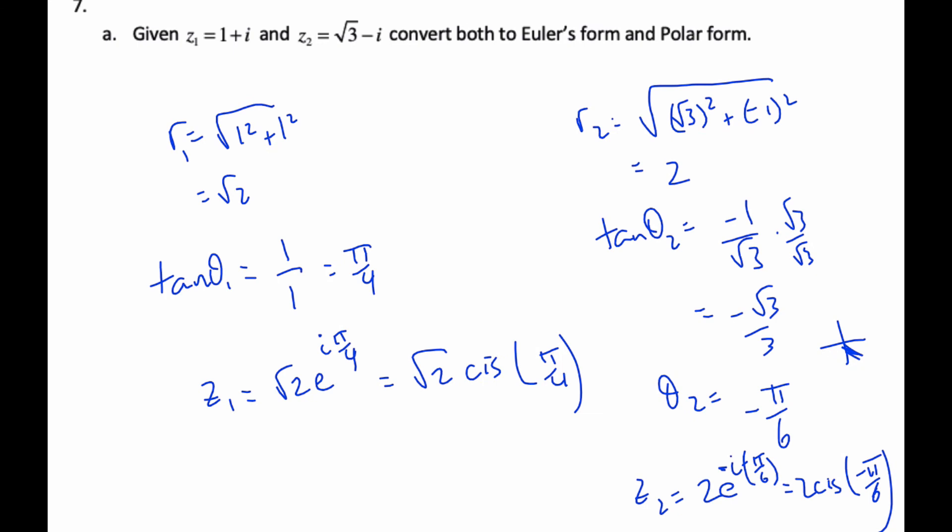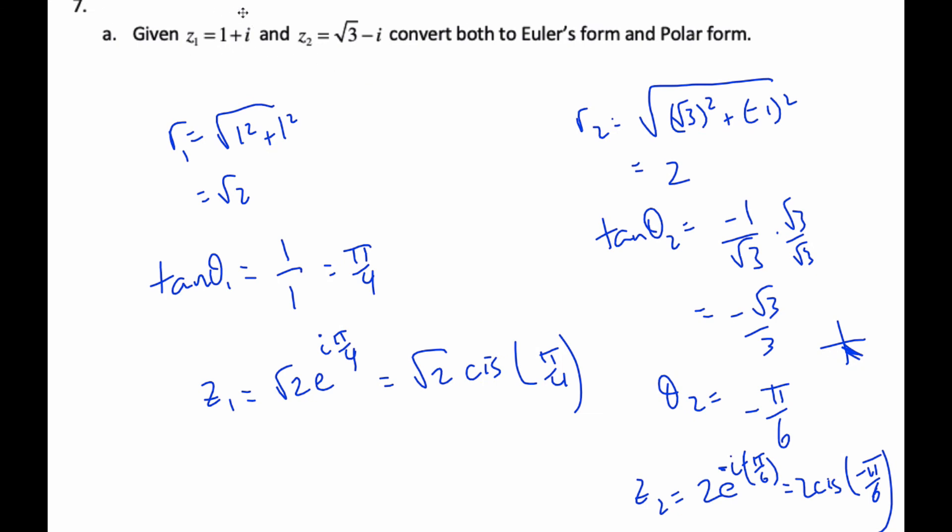So we can now multiply in Cartesian form, we can multiply in polar form, and we can multiply in Euler's form.